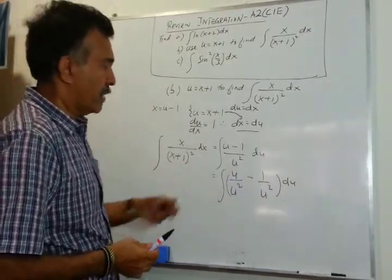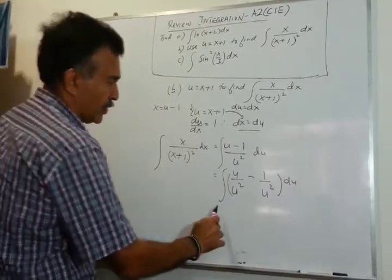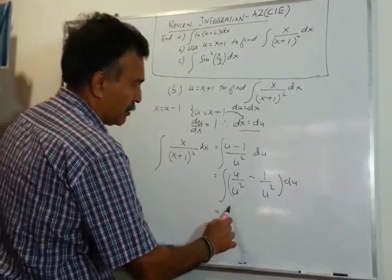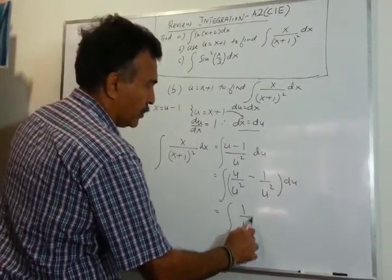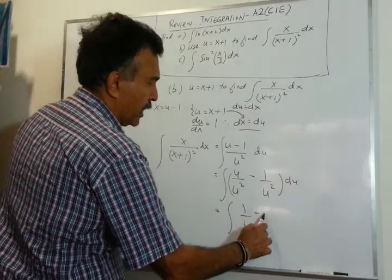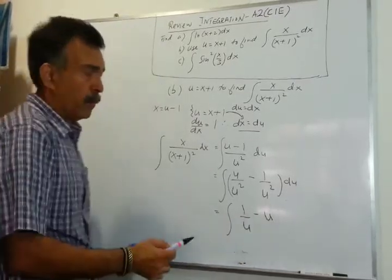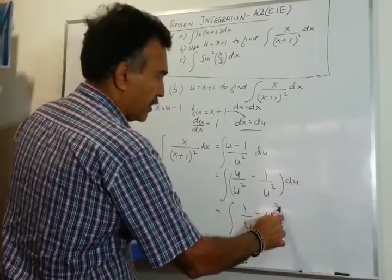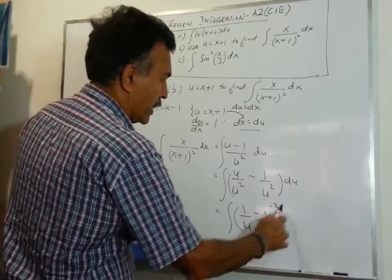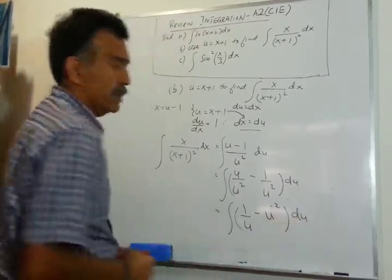We can write (u minus 1) over u² as u/u² minus 1/u², which simplifies to 1/u minus 1/u², and we have du.